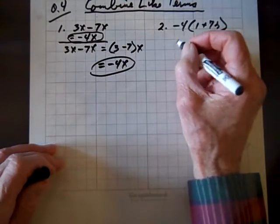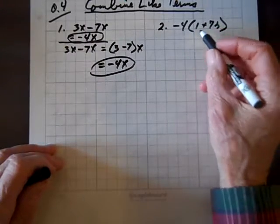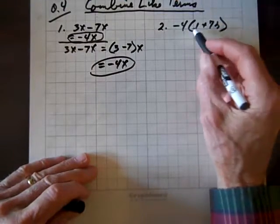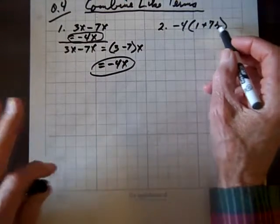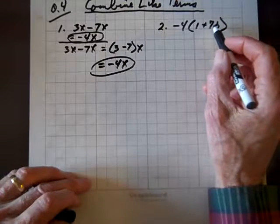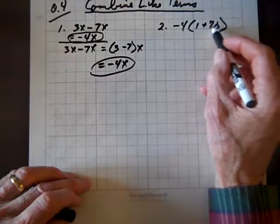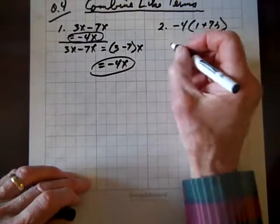Now, we'll use the distributive property, and this is multiplication, and notice 1 and 7r are not like terms. If this was r plus 7r, they'd be like terms, but they're not, so there's no way we can combine these other than what we already have right here in the parentheses.